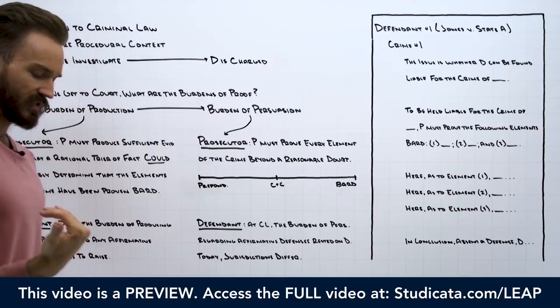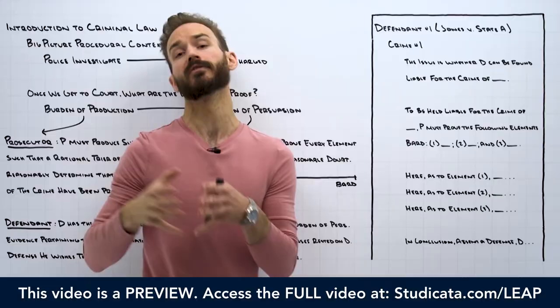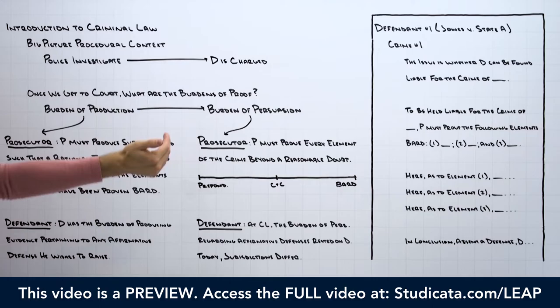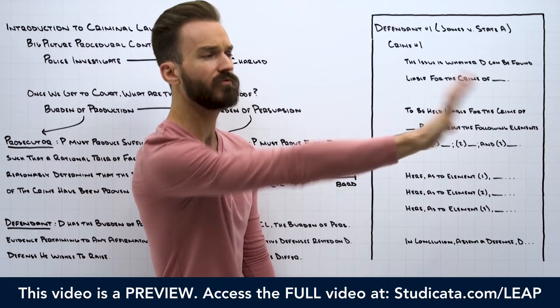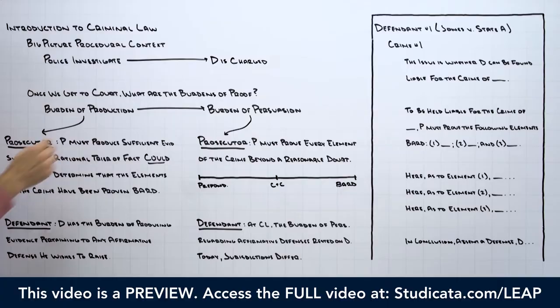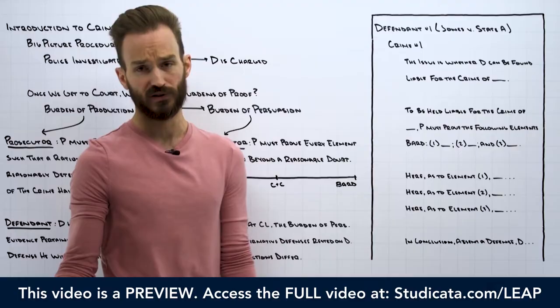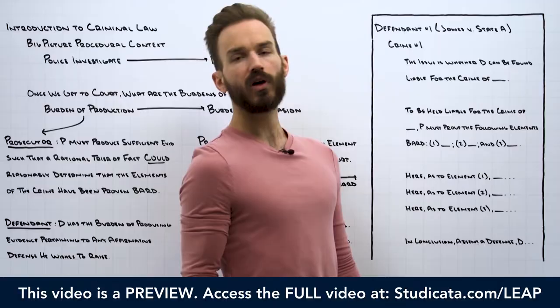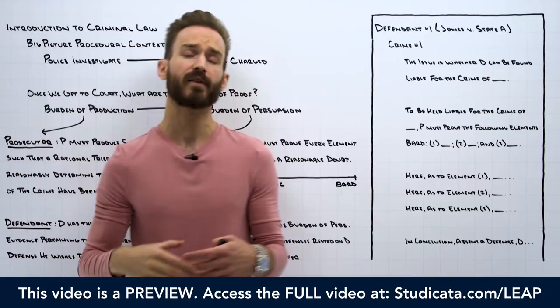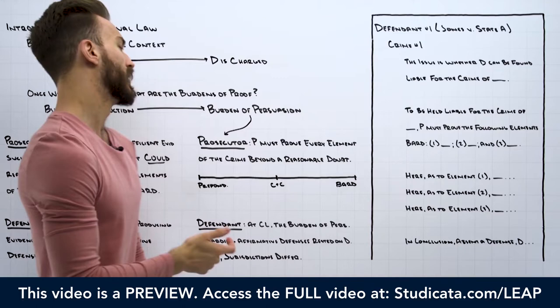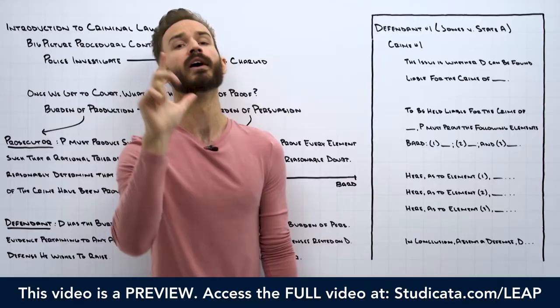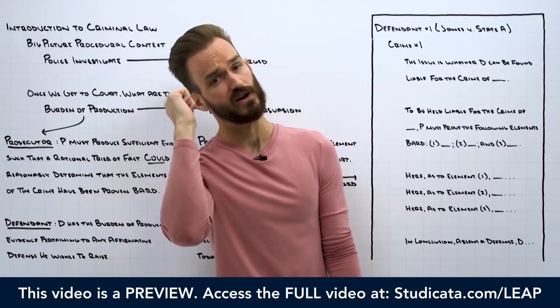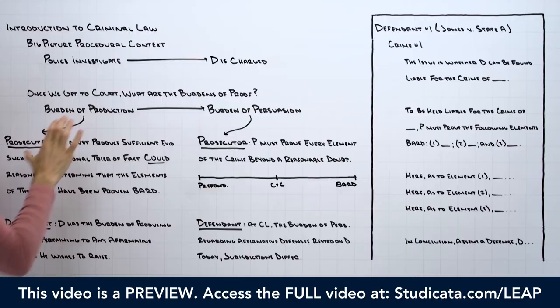In order to satisfy the burden of production — the first thing that has to happen if the prosecution wants to convict a defendant — the prosecutor needs to put forth evidence that goes to each element of the crime. The evidence must be sufficient such that a rational trier of fact could reasonably determine that the elements of the crime have been proven beyond a reasonable doubt. For example, common law murder typically has three elements: an unlawful killing, of another human being, with malice aforethought.